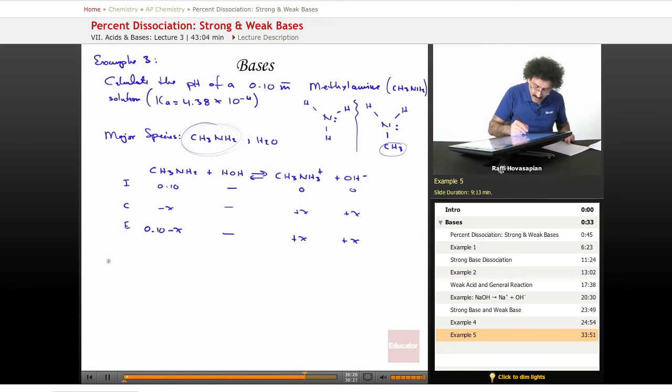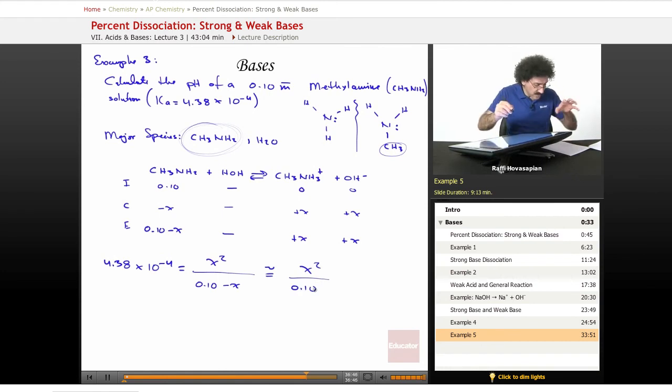We have 4.38 times 10 to the negative 4 is equal to, this times that divided by that, X squared over 0.10 minus X, approximately equal X squared over 0.10. When we do this approximation, we end up with X equal to 6.6 times 10 to the negative 3.